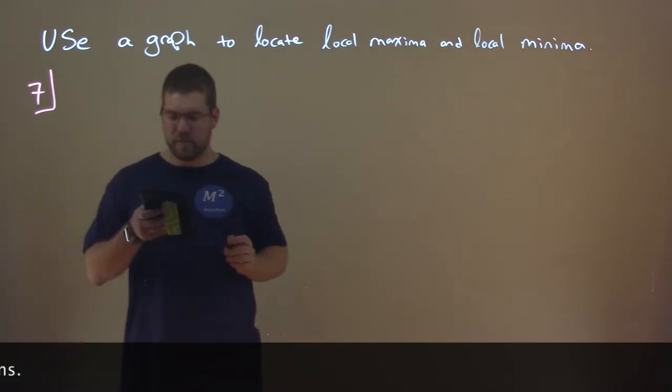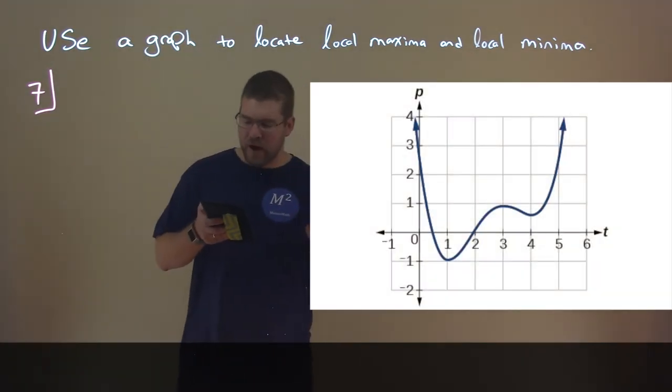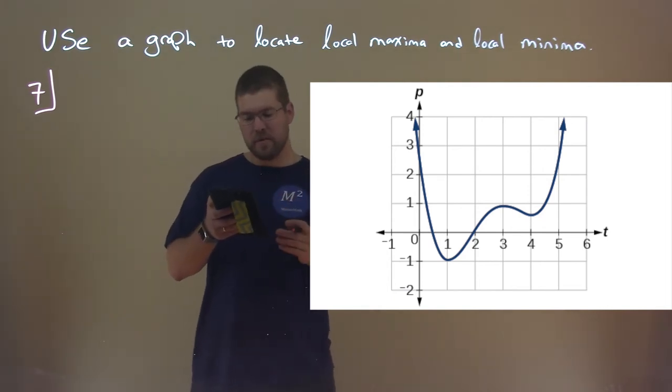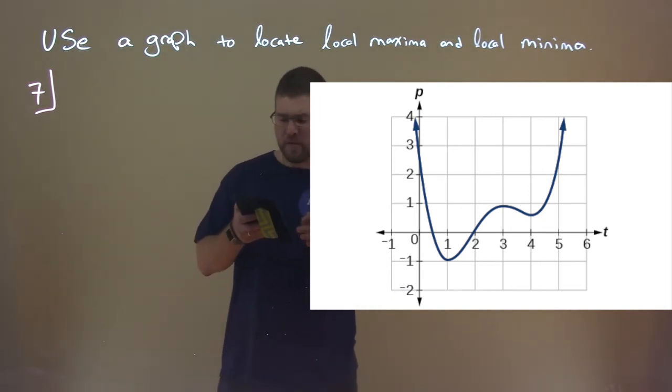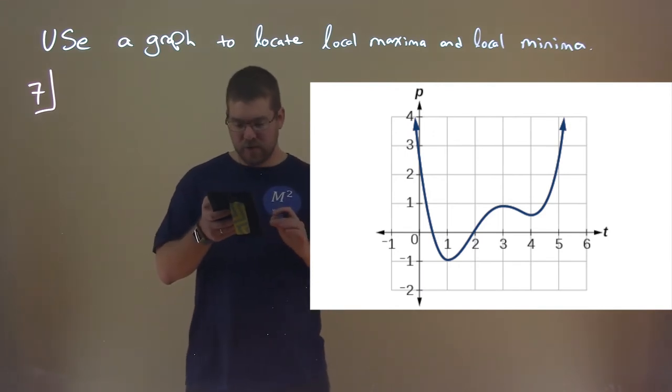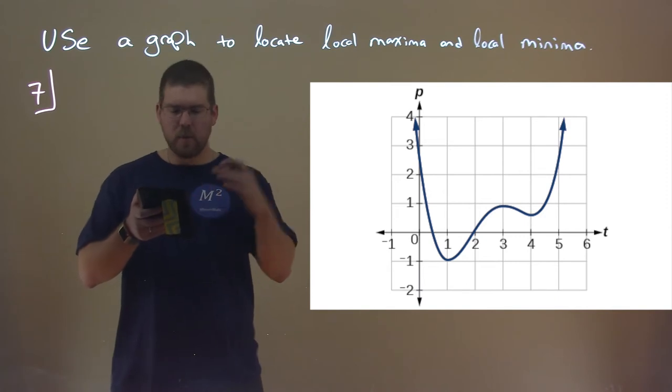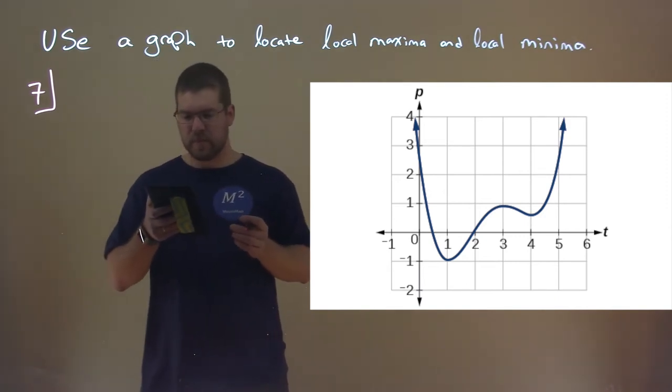Number seven, we're given this graph here and we want to find the function P of T in our figure. Or given the function P of T in our figure here, identify the intervals in which the function appears to be increasing or decreasing. So what do we have? We look at our function here.